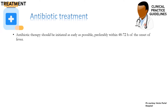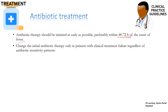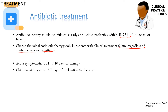Antibiotic therapy should be initiated as early as possible, preferably within 48 to 72 hours of the onset of fever. Change antibiotic therapy only in patients with clinical treatment failure, regardless of antibiotic sensitivity patterns. This is very important — most clinicians don't know this. When the urine culture report comes, even if the patient is improving, one should not switch to a higher-grade antibiotic, as that is not indicated or justified. In acute symptomatic UTI, the total duration of antibiotics is 7 to 10 days, whereas for cystitis, 3 to 7 days of oral antibiotic therapy is recommended. In asymptomatic bacteriuria, antibiotics are not indicated.